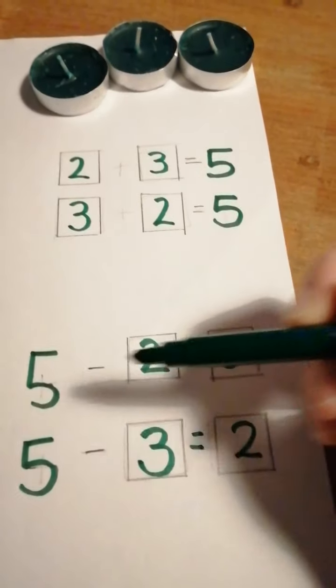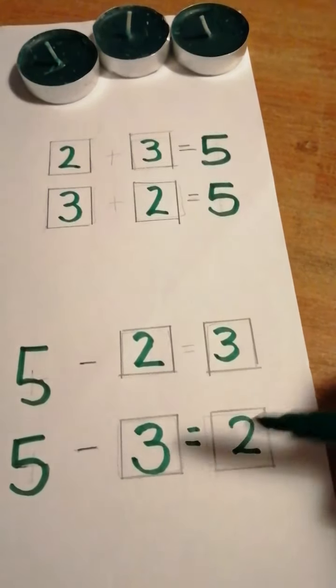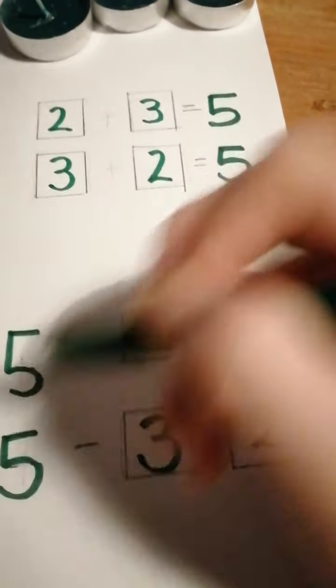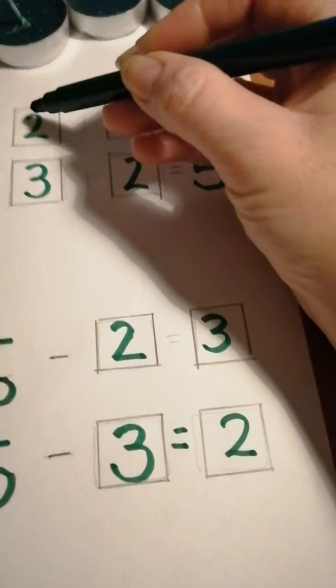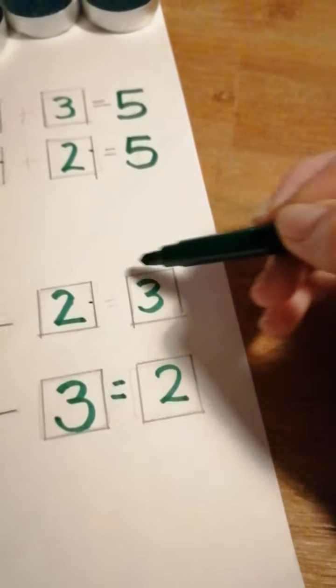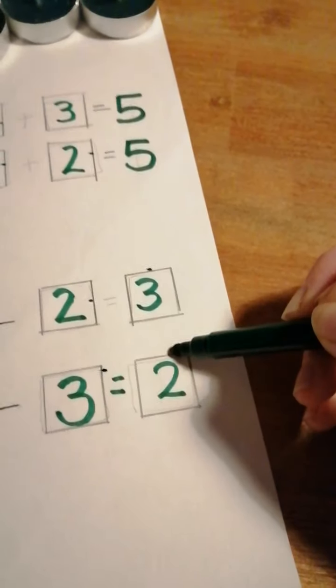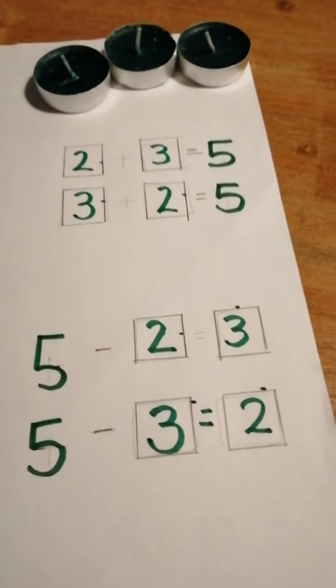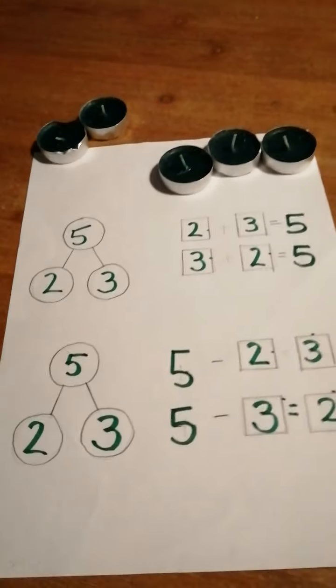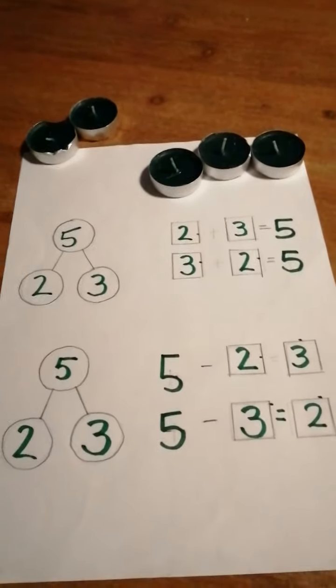So can you see? We've used all the same numbers, but all my sums are different. And these are called the fact families because you've got your whole number in each of your sums. You've just got to work out the 2, the 3, the 4, the 5, the 6, the 7, and the 8 facts that go with it. And they will all be different.